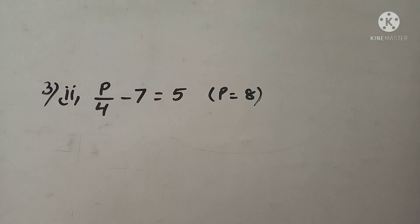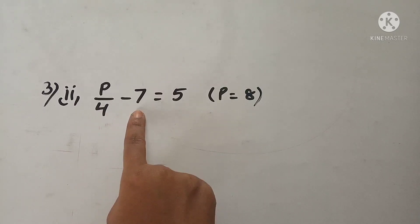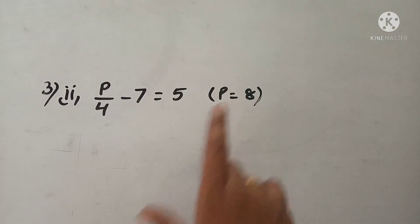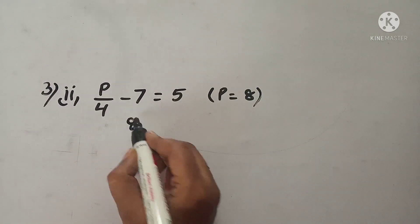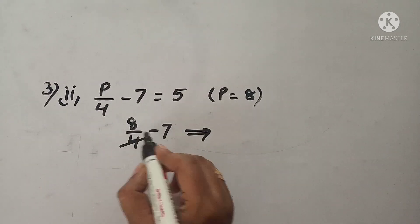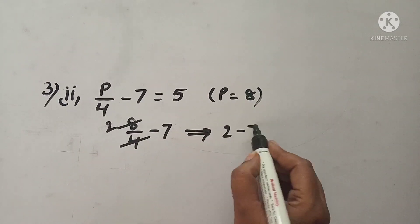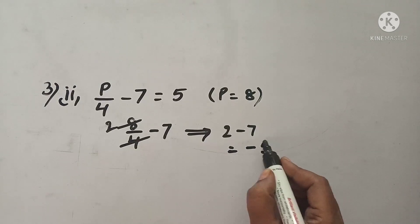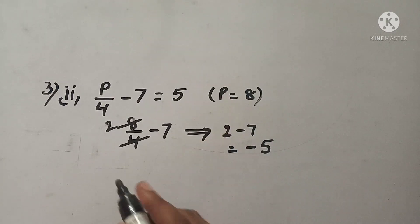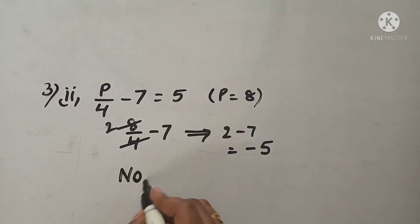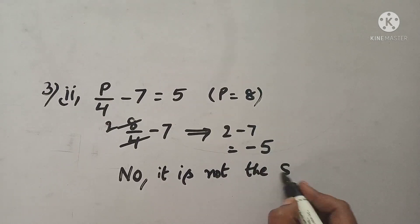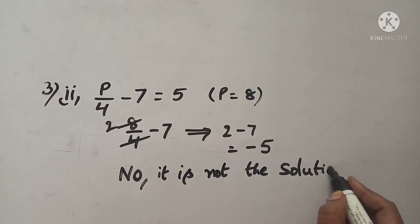Let's see the second one: p by 4 minus 7 is equal to 5. We substitute p value as 8. So 8 by 4 minus 7 gives us 2 minus 7 which equals minus 5. But here it is given as plus 5. So it is not the solution of that equation.